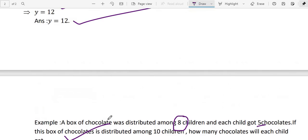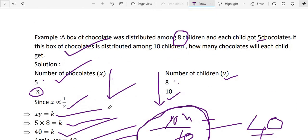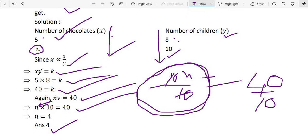So here finish inverse variation, similar thing, almost similar thing. Only direct variation X by Y, here X into Y. Thank you for watching.